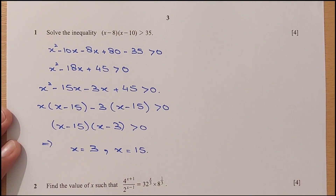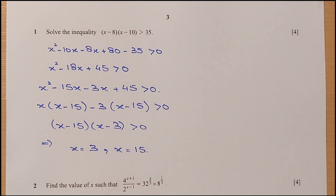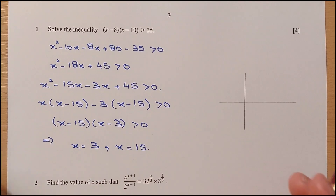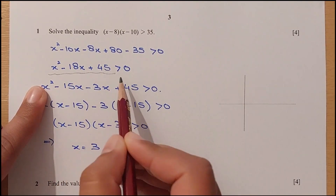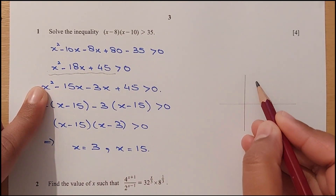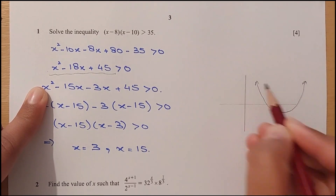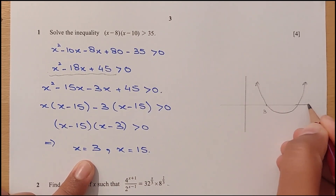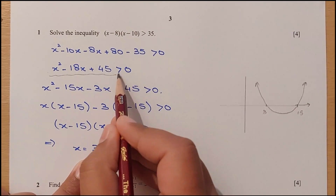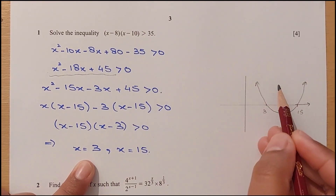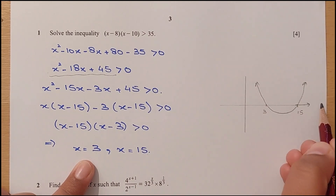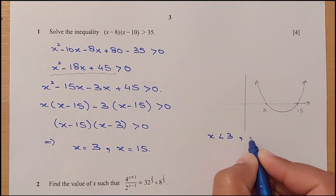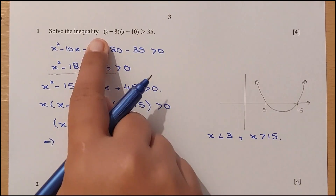Now let's solve the inequality. It is a quadratic equation, so its graph looks like a parabola. Since the x squared coefficient is positive, the parabola opens upward. We have two x values: positive 3 and positive 15. We need to find when the output is positive — above the x-axis. When values are less than 3 and more than 15, this is positive. So when x is less than 3 and when x is greater than 15, this inequality holds.